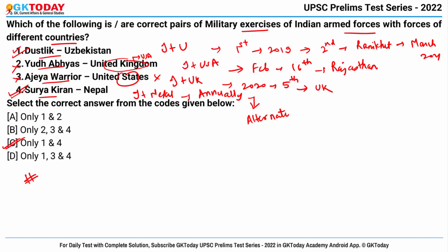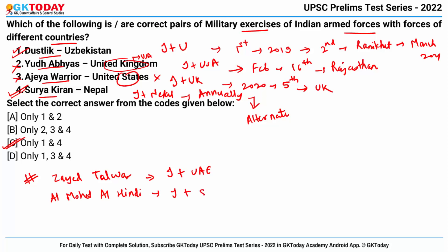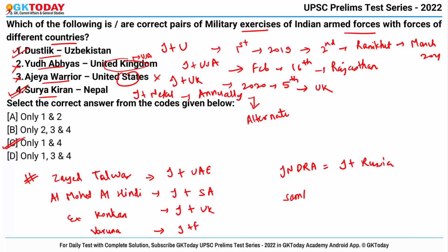Some other important recent military exercises: Zayed Talwar was held between India and UAE; Al Mohed Al Hindi was between India and Saudi Arabia; Exercise Konkan was between India and UK; Varuna is the military exercise between India and France; Indra is between India and Russia; and Sampriti is between India and Bangladesh.